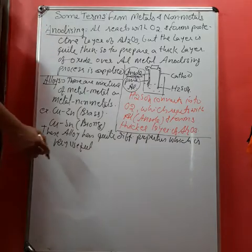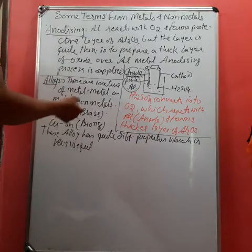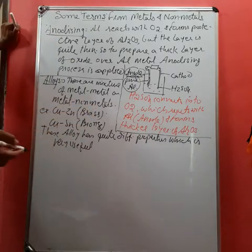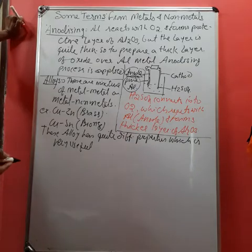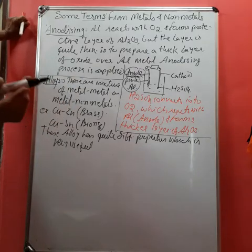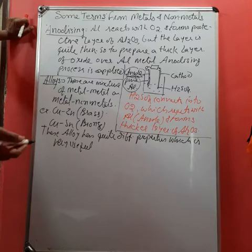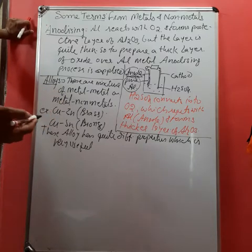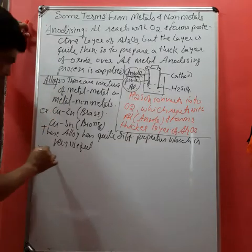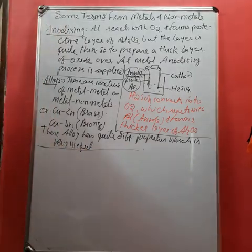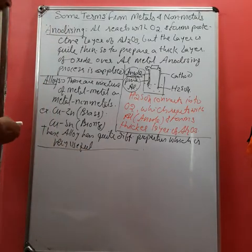Duralumin, an alloy of aluminum, is used to prepare aircraft body with aluminum and titanium. One more term which is very important is aqua regia.